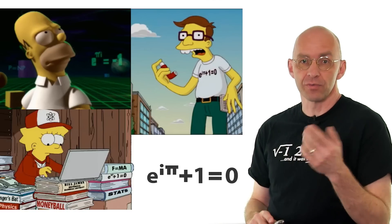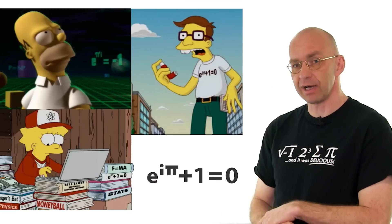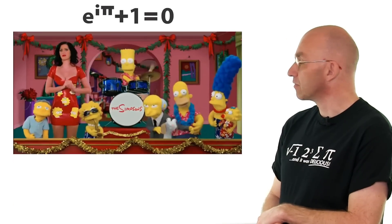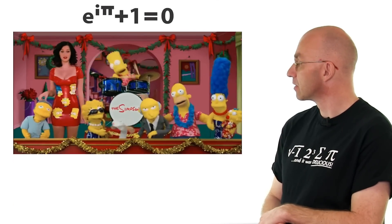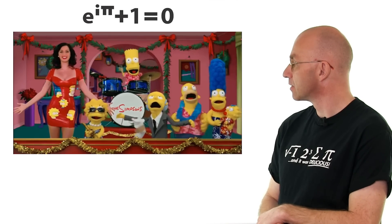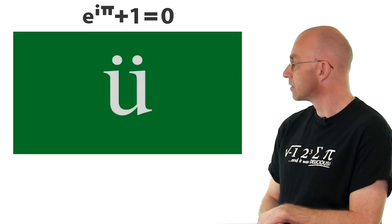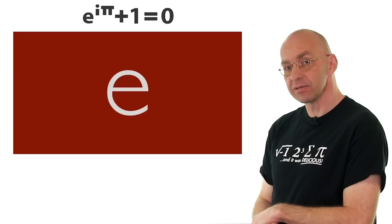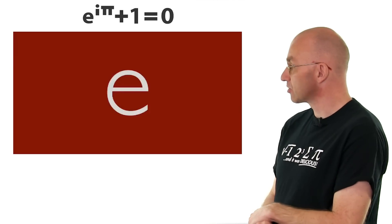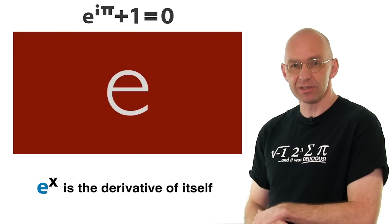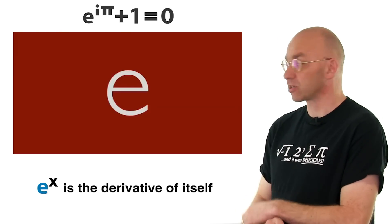Quite a few of you won't be familiar with e and i, so let's see what the Simpsons can tell us about these two numbers. From the show: 'Tonight's Simpsons episode was brought to you by the symbol umlaut and the number e — not the letter e, but the number whose exponential function is the derivative of itself.' So that mystery number e to the power of x is the derivative of itself. That's quite mysterious, so let's figure out what that means and what e actually is.